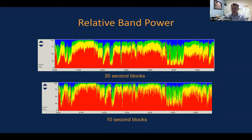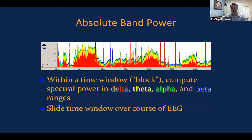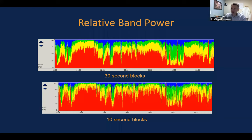This is the same information as before, except in every single column I've taken the percent of each — normalized to the maximum value of all of them put together — showing what percent of the total is each band. I can display these things in different time periods. At 30 seconds at a time, the graph is a little bit smoother. At 10 seconds at a time, it is more temporally accurate but jumps around a lot and might be harder to read.